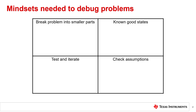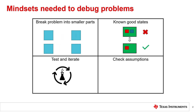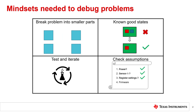By learning and utilizing these concepts, you will always have something to fall back on when faced with a tough problem. For this video, we've broken up the debug mindset into five high-level concepts: break the problem into parts, get to a known good state, test and iterate, check assumptions, and talk it out.